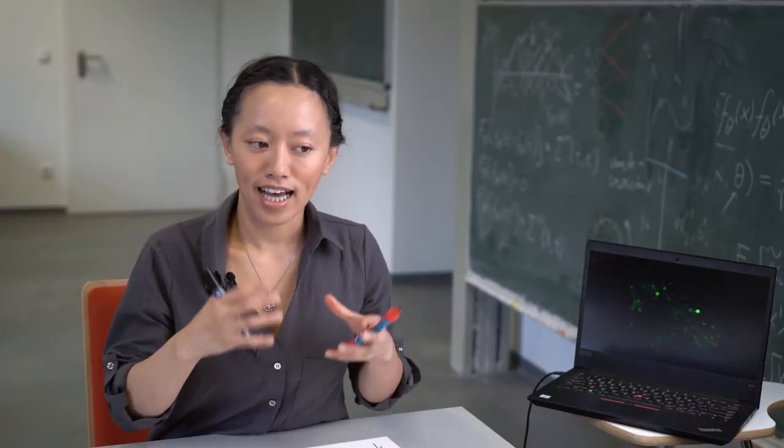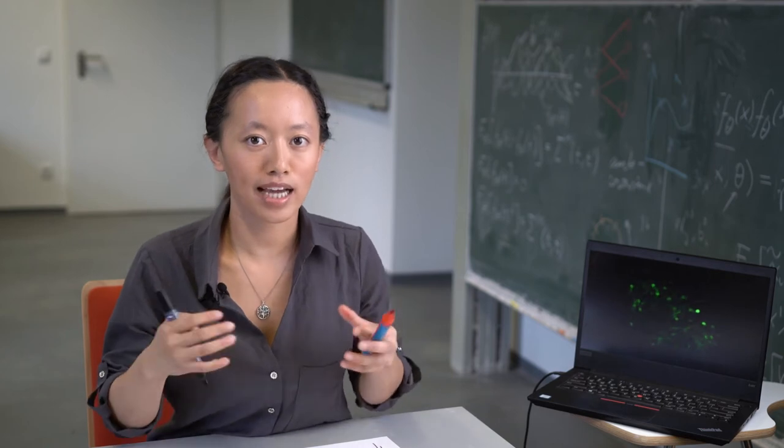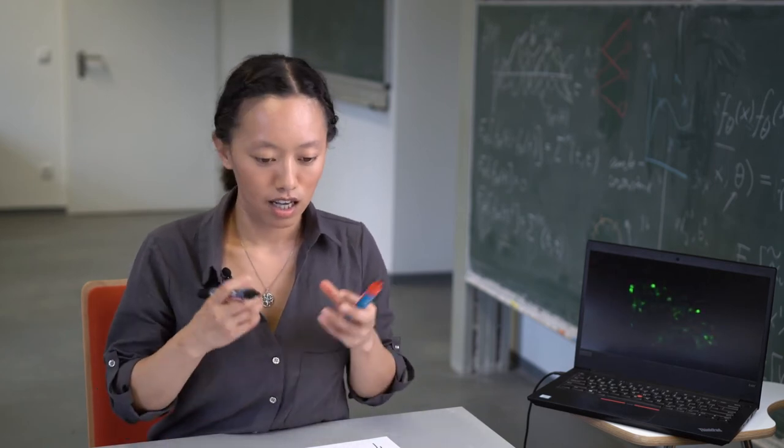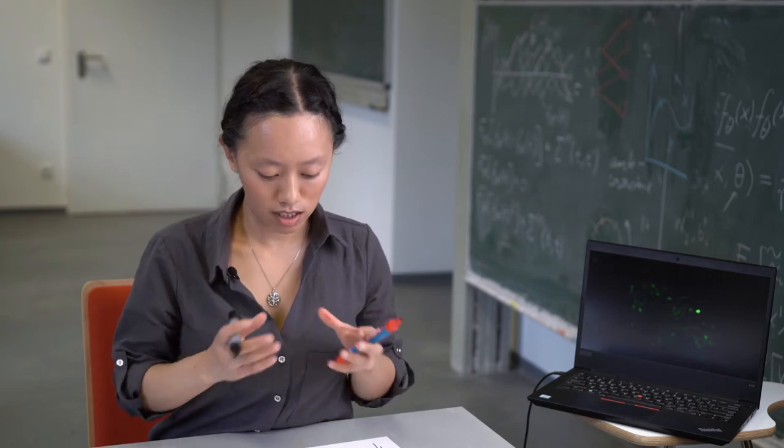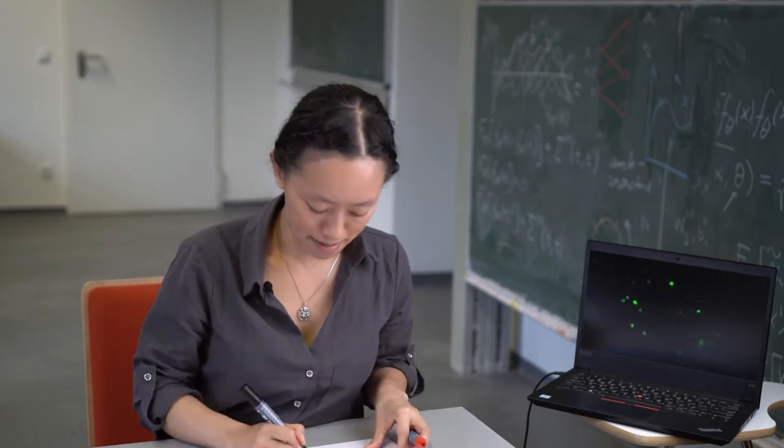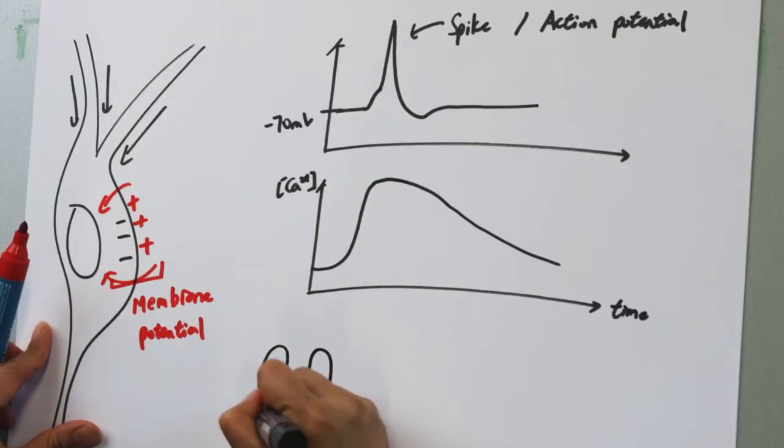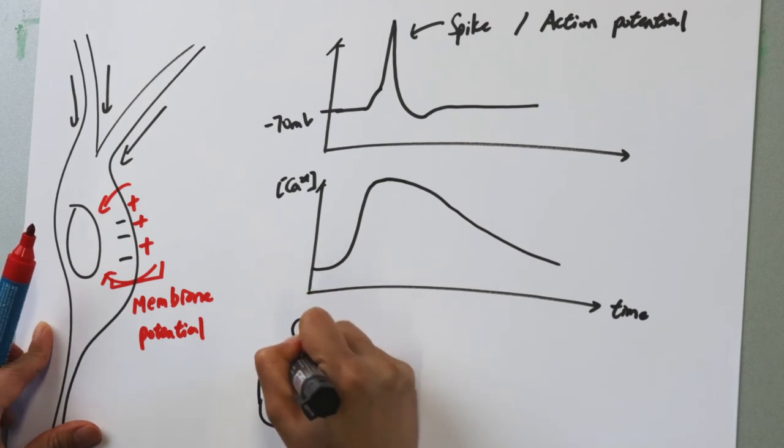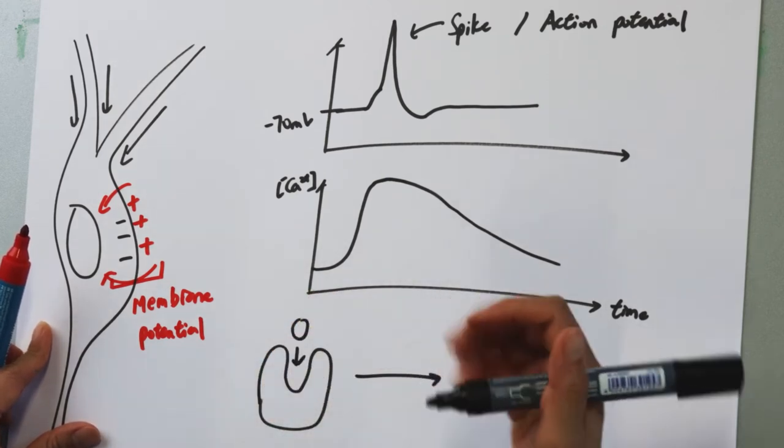So to look at activities, one can harness the change in the calcium ion concentration. And one way to do it is to have a molecule that can bind to calcium ion and become fluorescent.